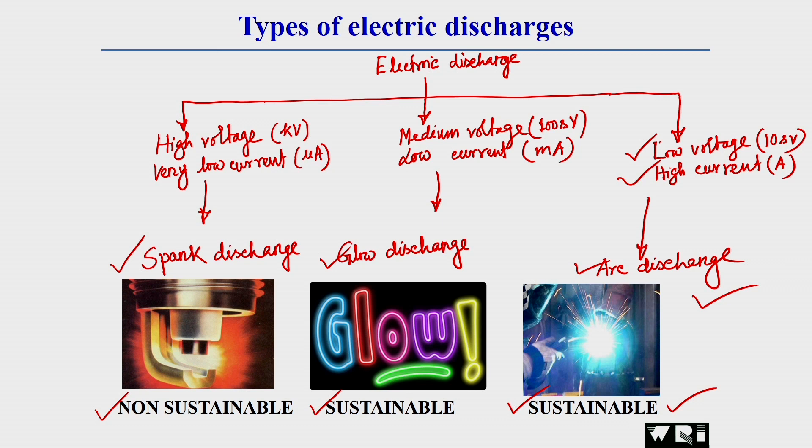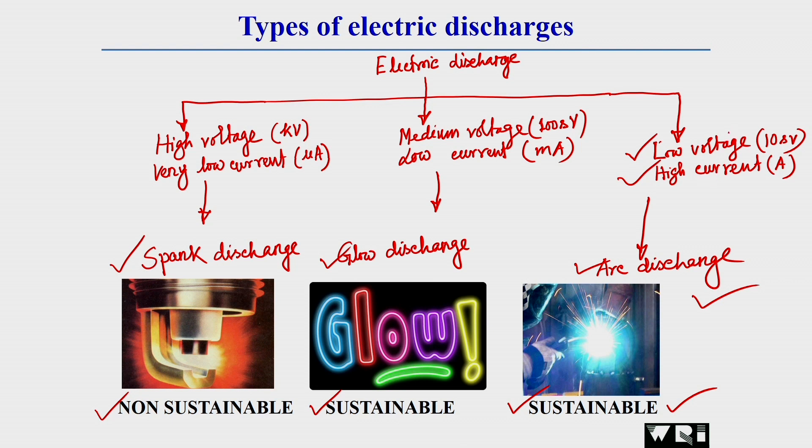Domestic power supply has very low current — within a range of 5 amperes — and high voltage ranging from 240 to 480 volts. For welding, we need the opposite: low voltage and high current. That is why a welding power source is very much essential to generate an arc suitable for welding.